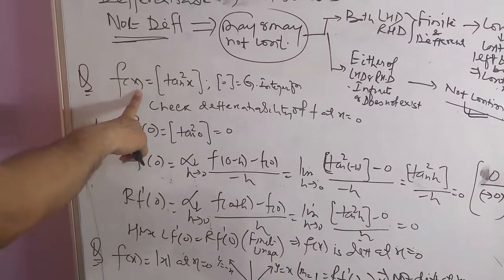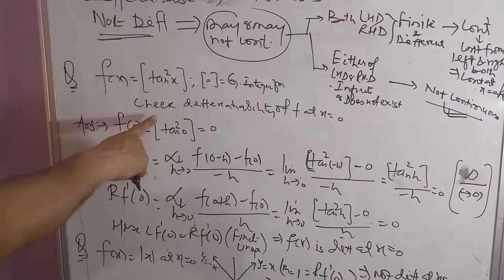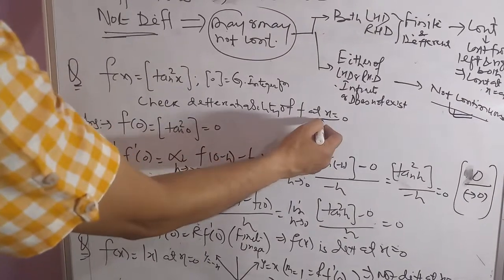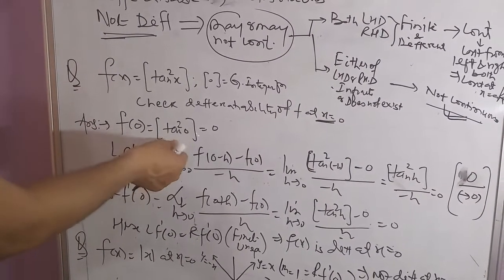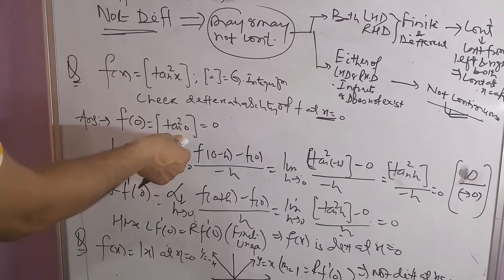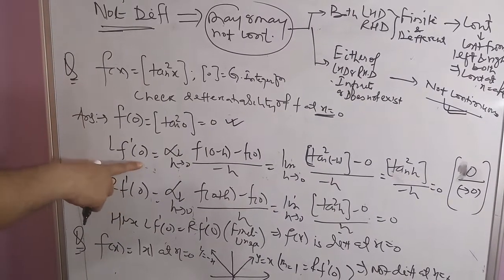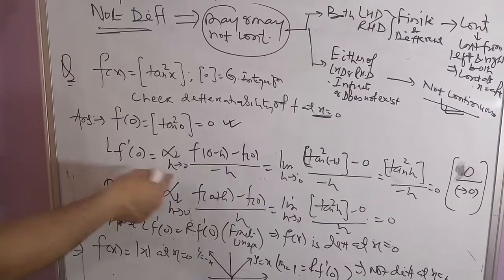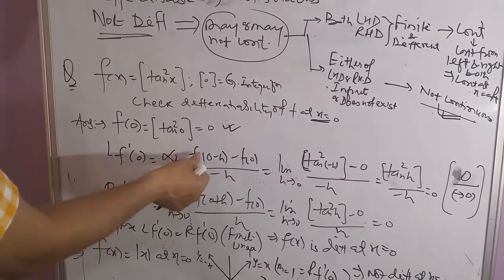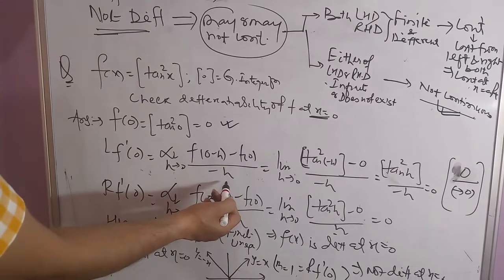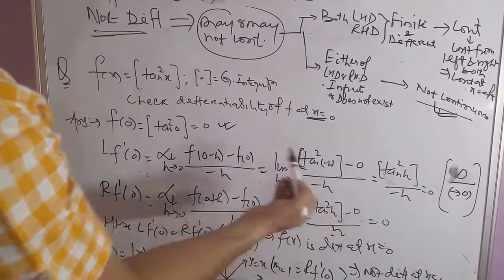We take a question here: f(x) equal to the integral part of tan²(x). We have to check differentiability of the function at x equal to 0. First, f(0): tan²(0) equals 0, so its integral part is 0. For LF'(0), using the formula, limit h tends to 0 of [f(0 minus h) minus f(0)] upon [minus h].